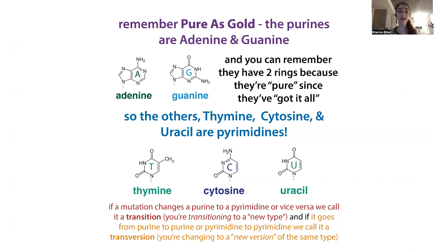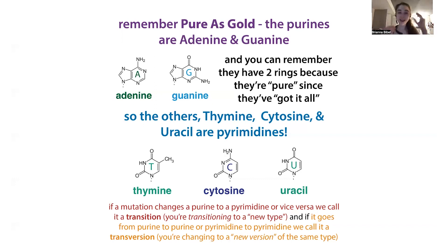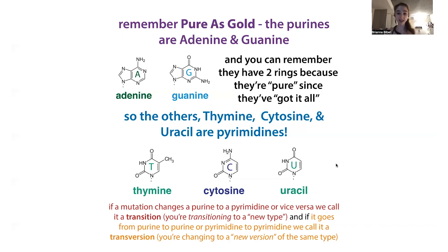The others by process of elimination must be the pyrimidines. The purines are the ones with two rings, and you can remember that they have two rings because they're 'pure' — they've got it all. The others must be the pyrimidines, and they must be the single-ring bases. So we have the purines and the pyrimidines.